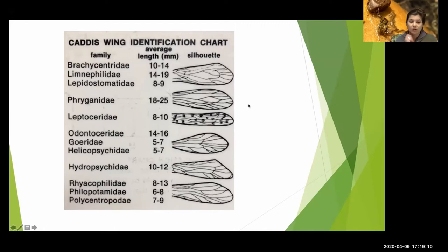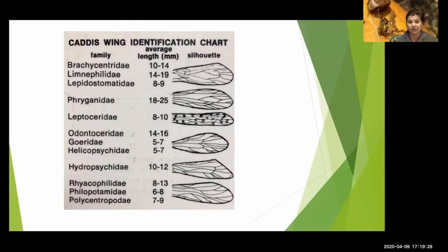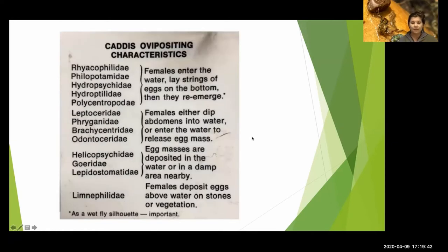Caddisflies also live everywhere. Stoneflies require highly oxygenated water, mayflies need very pure clean water, but caddisflies have many species that thrive in lakes, moving water, small streams, and big streams. They have considerably more reach as far as habitat.